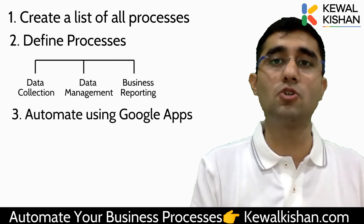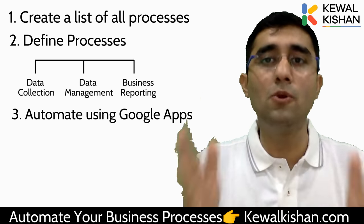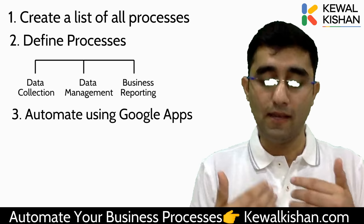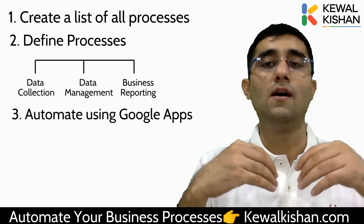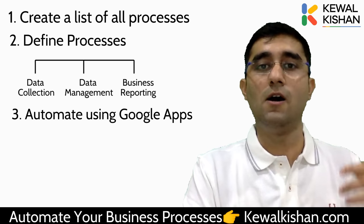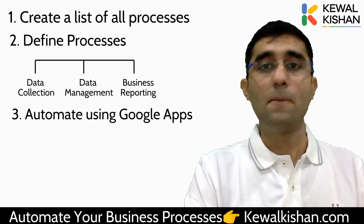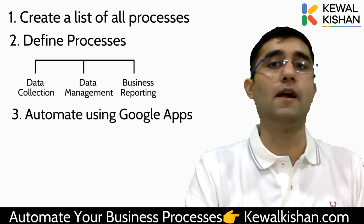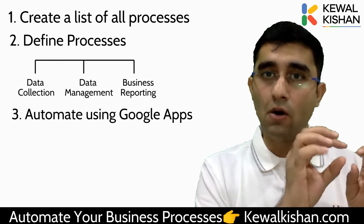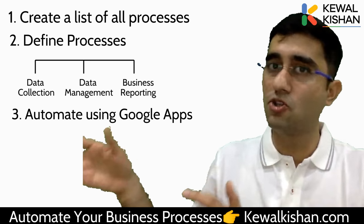Finally, create a business report. There is a Google application called Google Data Studio which you can connect with Google Sheets. Using drag and drop, you can create a beautiful business dashboard with line graphs, column graphs, or pie graphs showing insights on employee performance and process performance. To recap: Step 1 was writing down all processes; Step 2 was picking one process and mapping data collection, data management, and business reporting; Step 3 was implementing it using Google Form, Google Sheet, and business report.